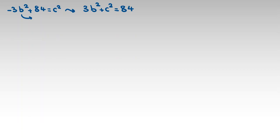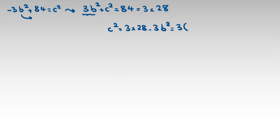Notice that 3b squared is a multiple of 3, and 84 is also a multiple of 3 (since 84 = 3 × 28). Therefore c squared must also be a multiple of 3, which means c itself is a multiple of 3.